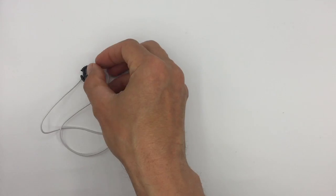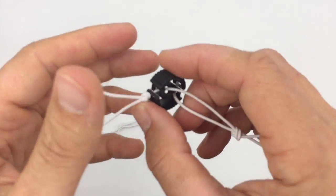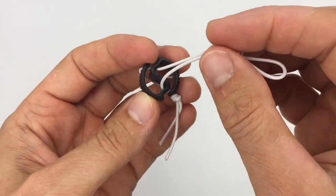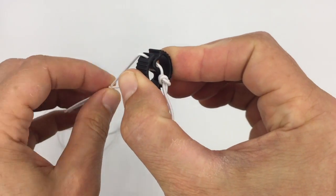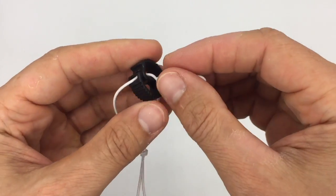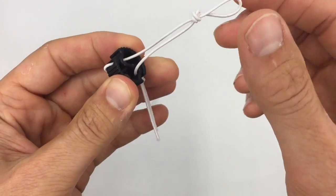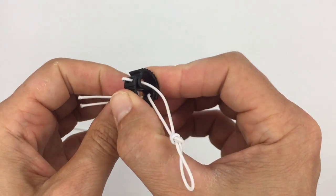And the second way is by taking the cords and making them pass through the center, allowing for a different function and a different way to tighten whatever you need to tighten.